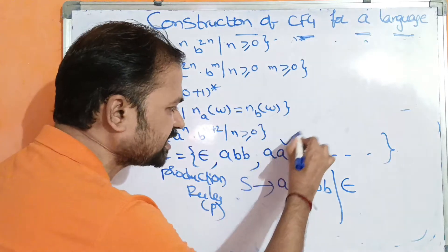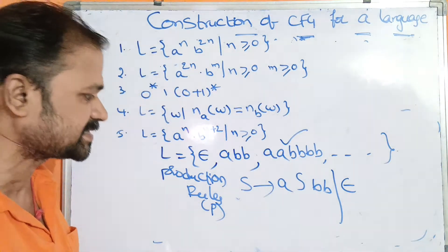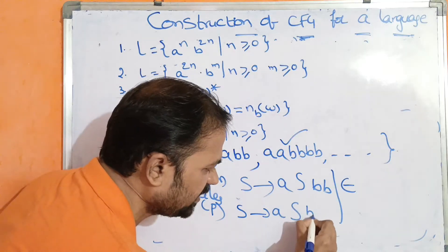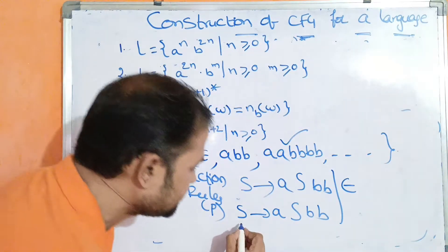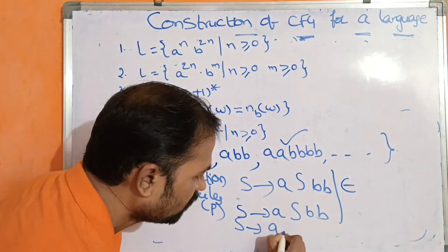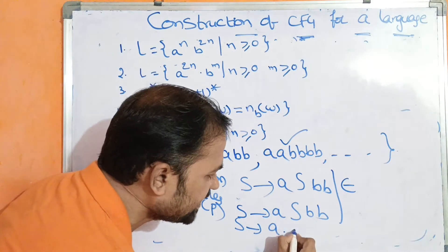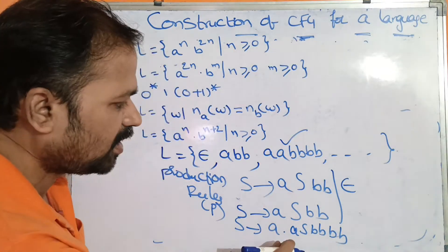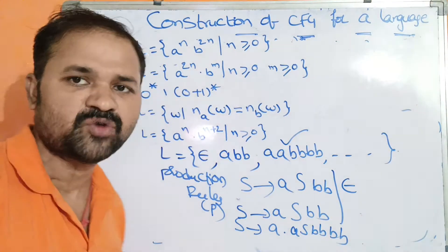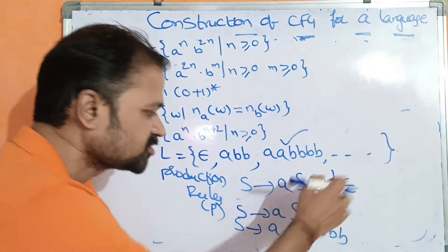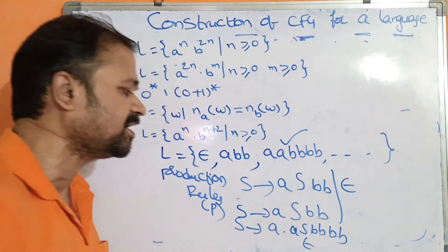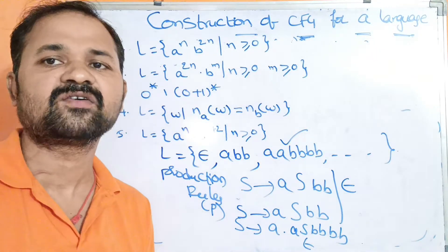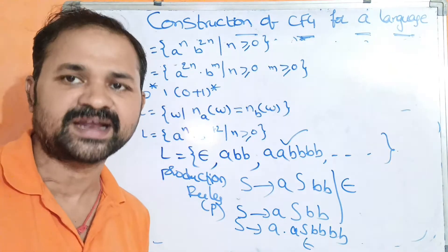Now let us try to derive the string aa bbbb. S → A S B B. Then substituting S again: A [A S B B] B B. Next, S → A S B B gives A A [A S B B] B B. We got 2 A's and 4 B's — so we can terminate. In place of S, substitute epsilon, giving double A and 4 B's. So our production rules are correct.